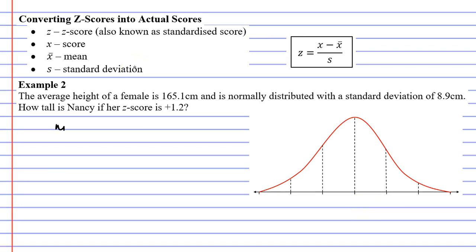Now our mean, commonly known as x-bar, is 165.1 cm. We're told that the average height is 165.1 cm. Our standard deviation, which we'll just call s, is 8.9 cm.